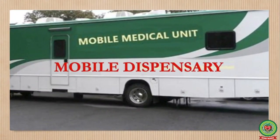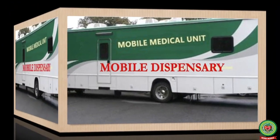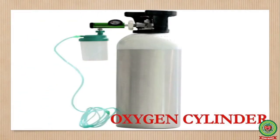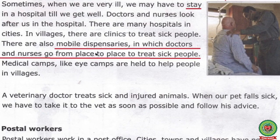Mobile dispensaries is a van with a doctor, nurse, some medicines and emergency equipment like an oxygen cylinder. The van goes from one village to another to look after sick people. What are mobile dispensaries? Mobile dispensaries are the vans in which doctors and nurses go from place to place to treat sick people.